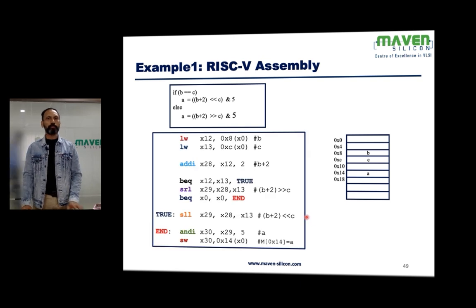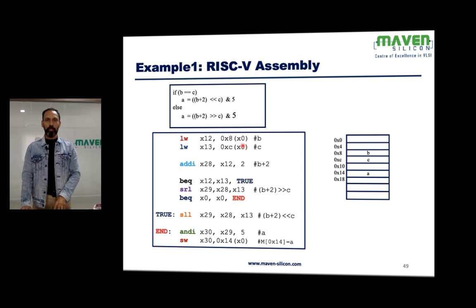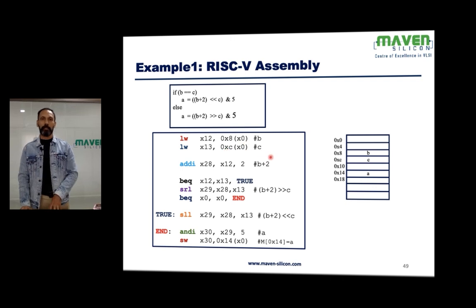To write the assembly program, we need a load word instruction. We read location 8, which is b, and put the value in register x12 (source register 1). We read location c and store the value in register x13. We use x0 because we want to read locations 8 and c directly without adding any offset — x0 is always 0. So the address is 8 plus 0, which is 8, and c plus 0, which is c.